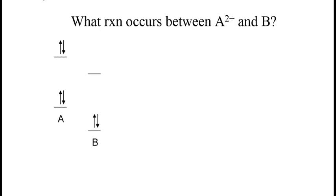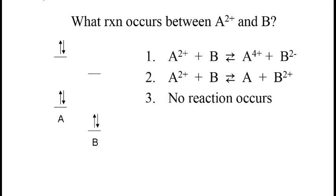Finally, we ask what reaction would occur between A²⁺ and B. And again, we have some choices. In this case, we need to understand right away that the diagram is for A and B, and we need to modify it for A²⁺ and B. And what is the difference between A and A²⁺? Two electrons have been removed.